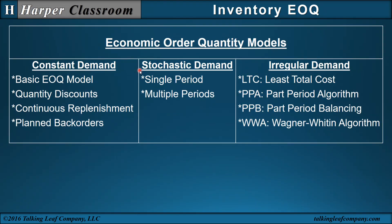Here are 10 EOQ models, illustrating that economic order quantity is more of a concept than an equation — equations come from the concept. The models are divided by demand type: constant demand, stochastic (probabilistic) demand, and irregular demand. Whether these EOQ models are based on the basic EOQ equation or on the ratio of average inventory to order frequency (which the irregular demand models use), EOQ is a concept that can derive many different techniques.